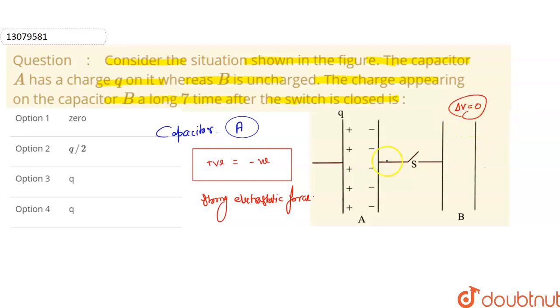Here, charge will not flow from here because positive charge and negative charge are equal to each other. So it will not flow from here. But after connecting, after the switch is closed, for capacitor B, the charge appearing will be zero. So the first option will be the correct option for this question. I hope you like this video and thank you so much for watching.